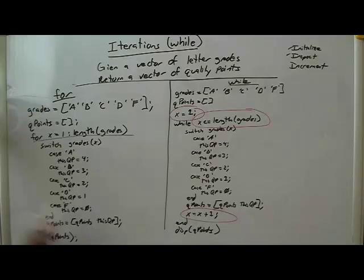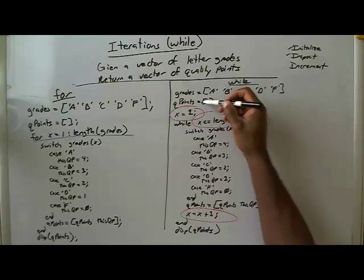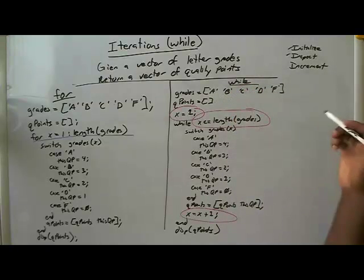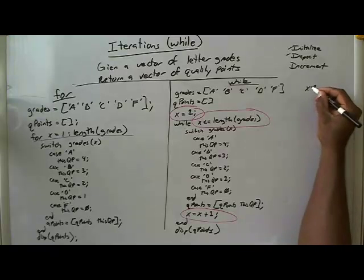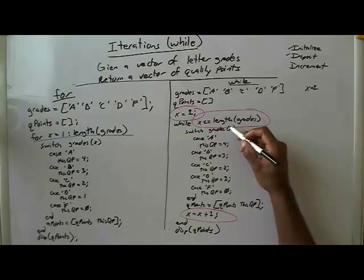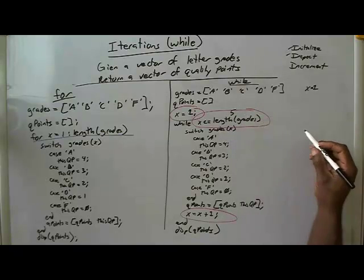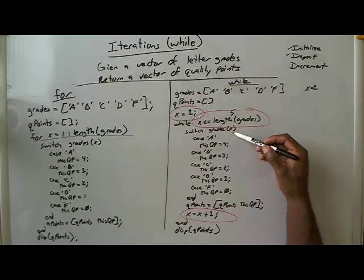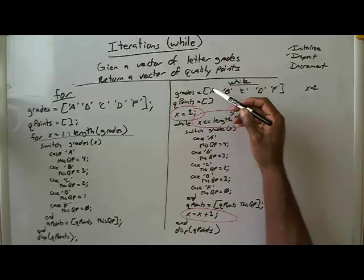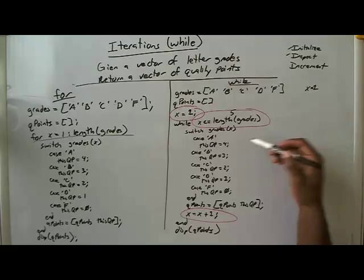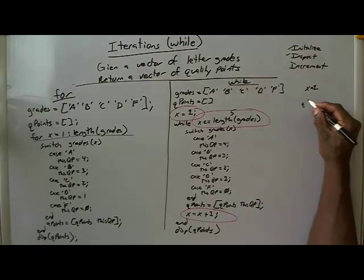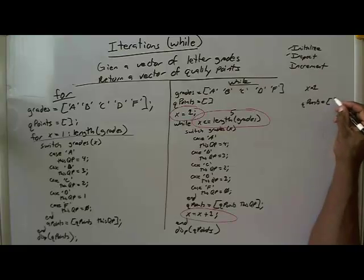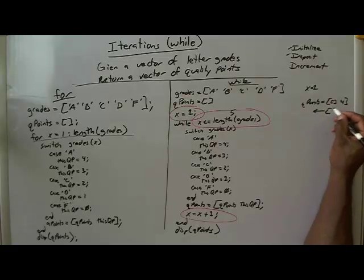So just for completeness, let me go through this loop. We start off with grades equal to that vector. Our output vector QPoints is equal to the empty vector. X starts off as 1. We check — the length of grades is 5. We switch on grades indexed at X, which with X equals 1 is A. We find that QP equals 4. QPoints equals the empty vector concatenated with 4, so QPoints is now the vector 4.